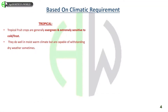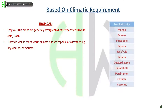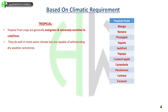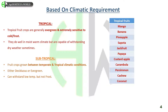Classification based on climatic requirement. Tropical fruit crops are generally evergreen and extremely sensitive to cold frost. They do well in moist warm climate but are capable of withstanding dry weather sometimes. Examples are mango, banana, pineapple, sapota, jackfruit, papaya, custard apple, carambola, persimmon, cashew, and coconut. Subtropical fruit crops are grown between temperate and tropical climatic conditions, either deciduous or evergreen, and can withstand low temperatures.